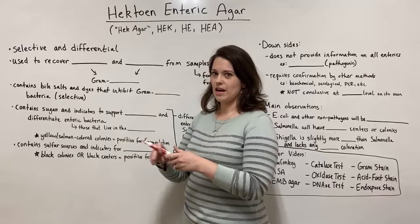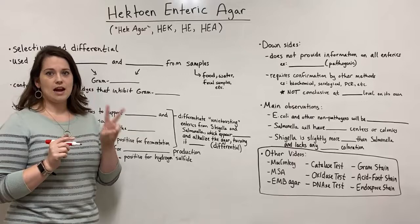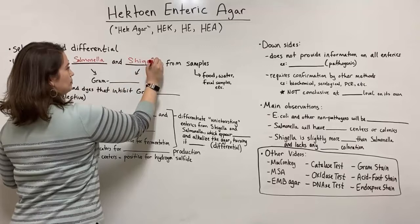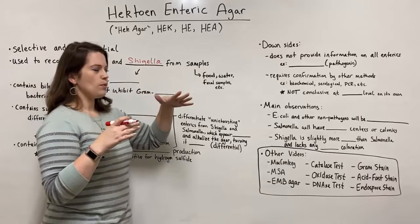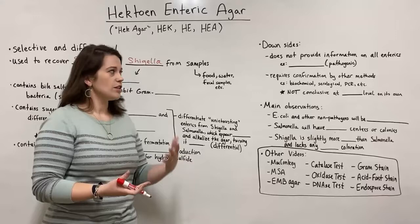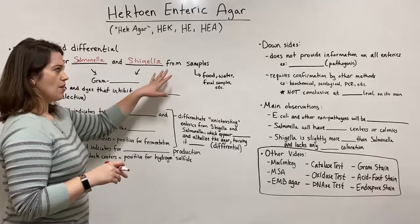Specifically, this type of agar is used to recover two major enteric pathogens: Salmonella and Shigella. These will be recovered from certain samples — food samples, water samples. A public health specialist or epidemiologist might use it to determine if areas are contaminated by enteric pathogens. Patient specimens such as fecal samples from a patient suspected to have a Salmonella or Shigella infection could also be tested with HEC agar.